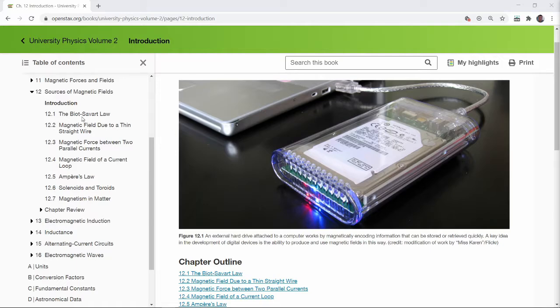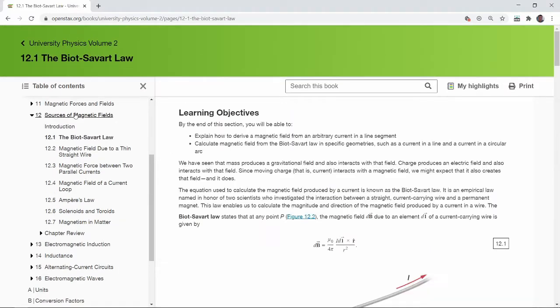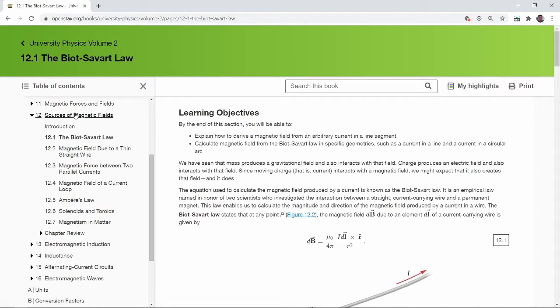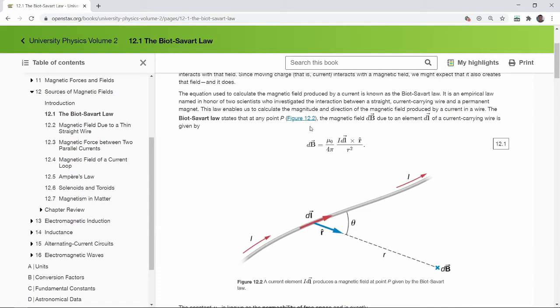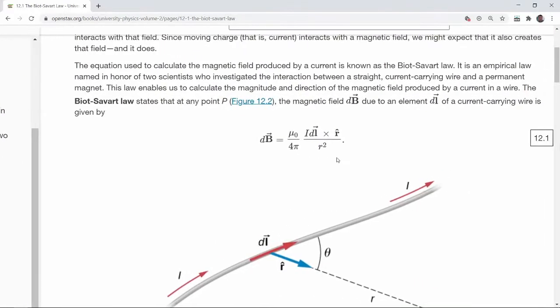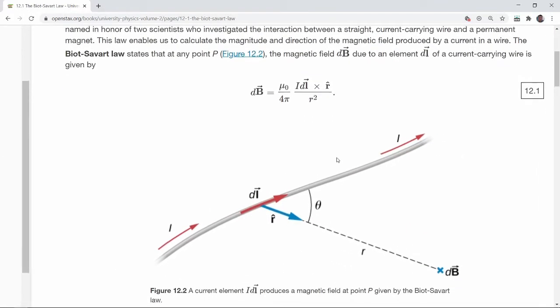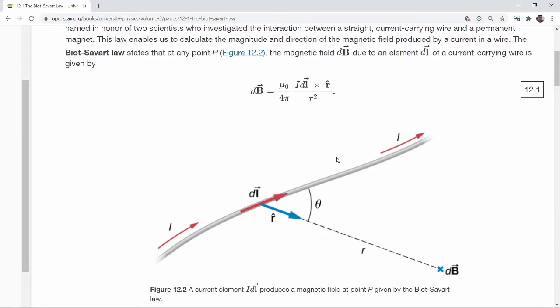In Section 12.1, the Biot-Savart law is where you are introduced to the elementary source of magnetic field: current. Biot-Savart law is presented in this form. I want you to take a look at it and notice the similarity between the Biot-Savart law and Coulomb's law for electricity. And there are key differences too.